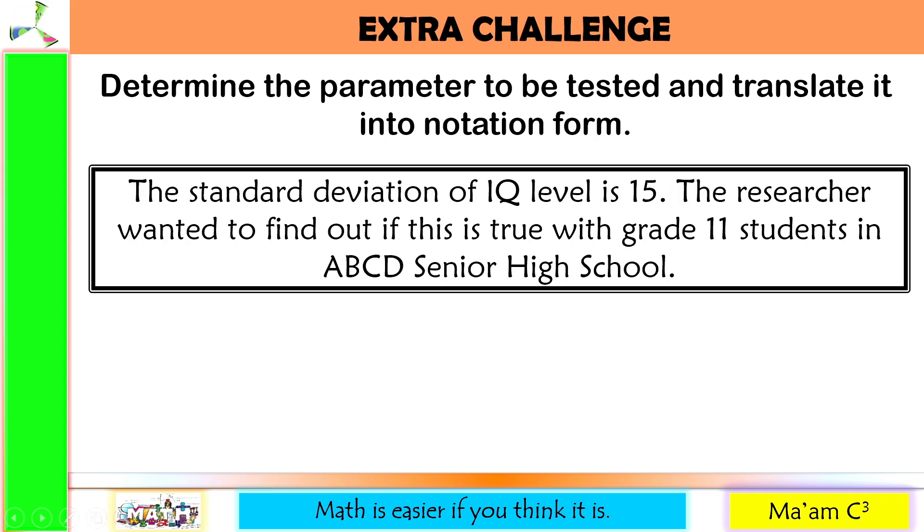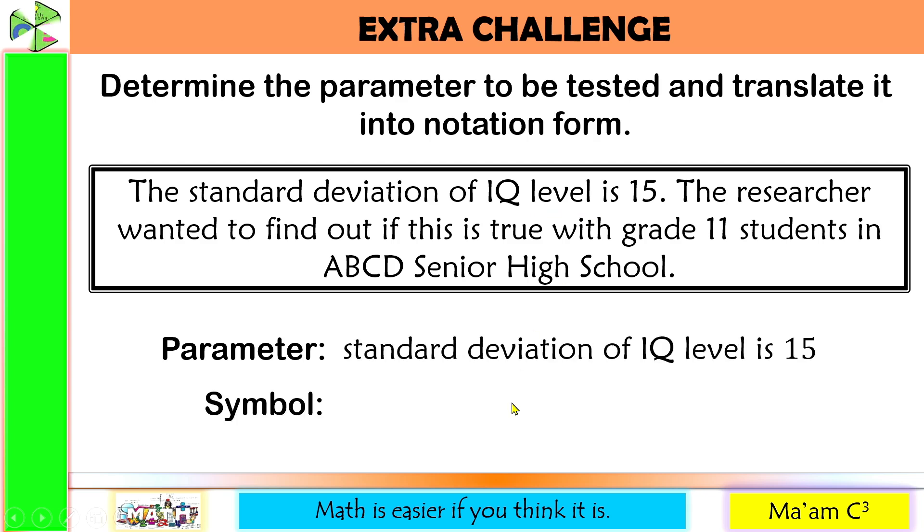Next one. The standard deviation of IQ level is 15. The researcher wanted to find out if this is true with grade 11 students in ABCD senior high school. For the parameter, we have here the standard deviation of IQ level is 15. In symbol, that would be standard deviation. So we have sigma is equal to 15.